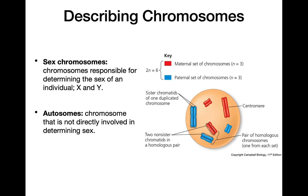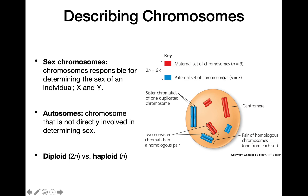Diploid is denoted as 2n. In this example, 2n equals 6, so a diploid cell has 6 chromosomes. A haploid cell then only has 3. Each haploid gamete from a parent contributes 3 chromosomes — 3 from the mother and 3 from the father — and when these fuse to make the diploid zygote, we get 6, which is the diploid number.